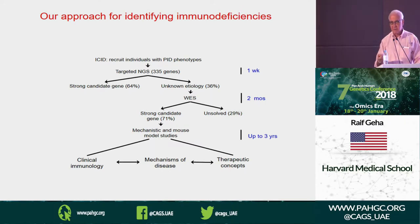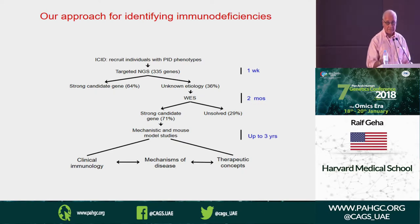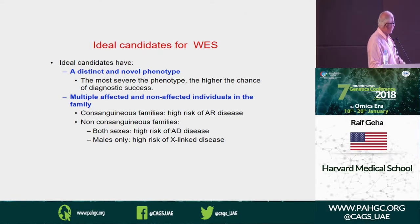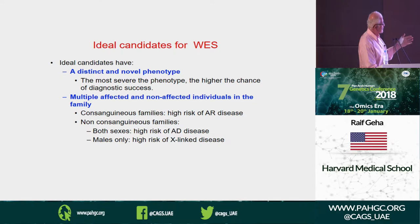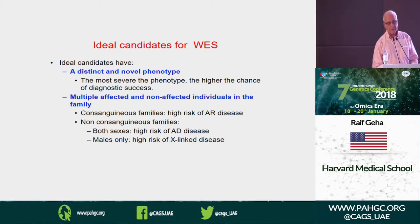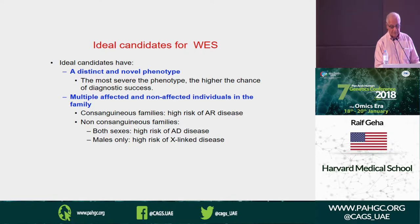The most difficult part is the mechanistic studies. When we find a new gene and suspect it's really the gene, we don't wait — we go directly to CRISPR-Cas, which we can make in our lab, and use the Harvard Genomic Facility for injecting the mice. We have at least 12 or 15 mice with genetic defects that mimic human disease, including point mutations. The ideal candidate is a distinct and novel phenotype, plus a large family with multiple affected and non-affected siblings for in silico filtering.